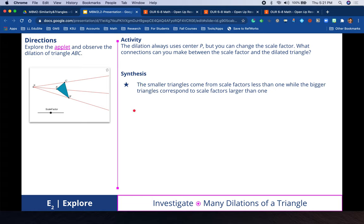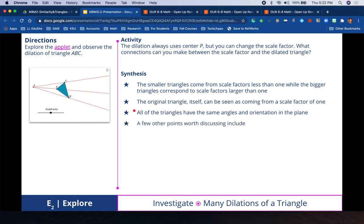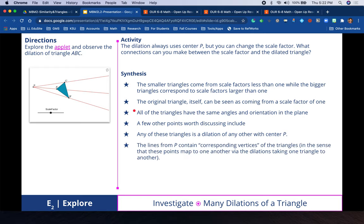To synthesize: smaller triangles come from scale factors less than 1, while bigger triangles correspond to scale factors larger than 1. The original triangle can be thought of as coming from a scale factor of 1. All the triangles have the same angles and orientation. Any of these triangles is a dilation of any other with center P. The lines from P contain corresponding vertices that map to one another via the dilations.